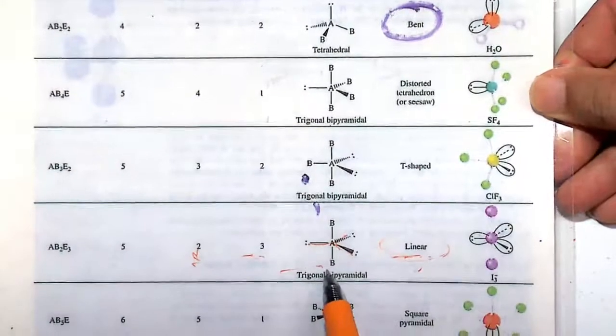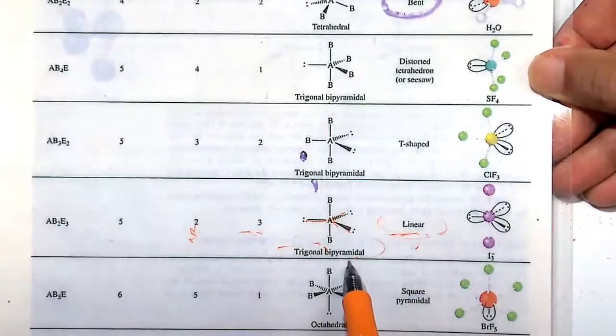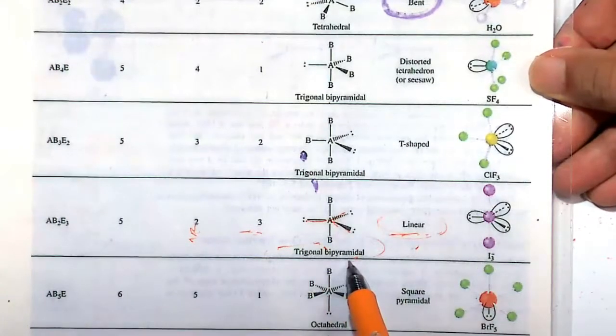But this one makes it a molecular geometry of linear, okay? So we'll draw something like this. The three electrons actually established what's known as a trigonal bipyramidal shape. And this will be a nonpolar molecule.